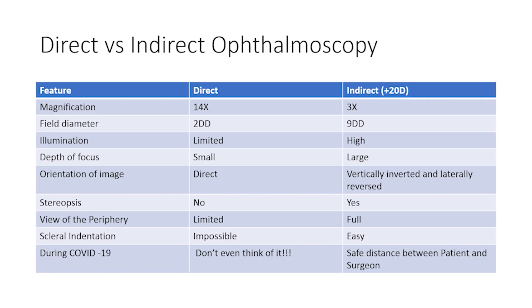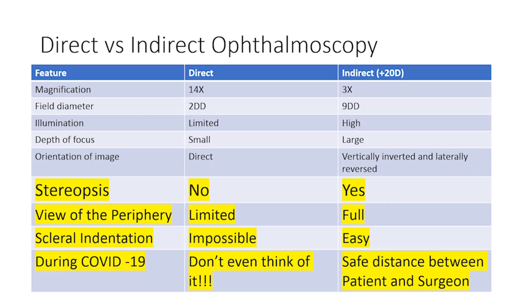The retina can be viewed using a direct method or an indirect method. In the indirect method, the retina is viewed indirectly by viewing an aerial image formed by a high power plus lens called the condensing lens. This table highlights the main differences between the two techniques. The most important advantages of the indirect method over the direct are that it offers stereopsis and a larger field of view, both of which are absolutely necessary to evaluate a retinal detachment.